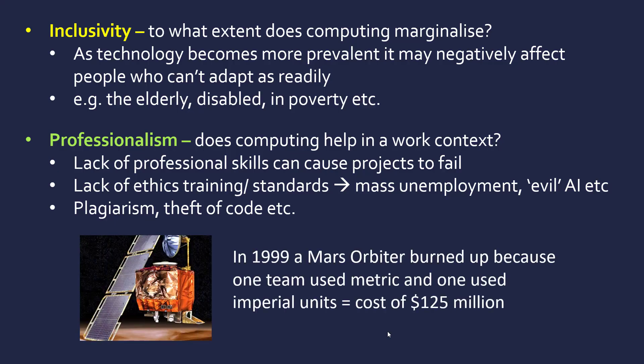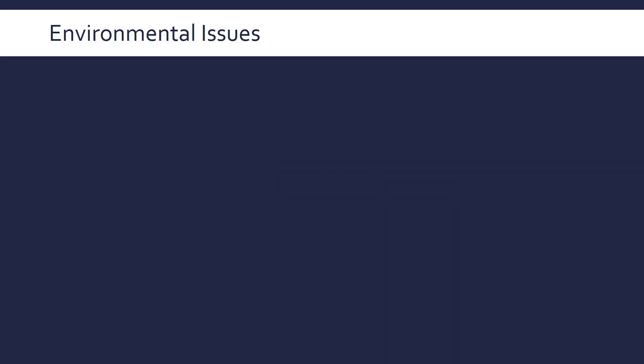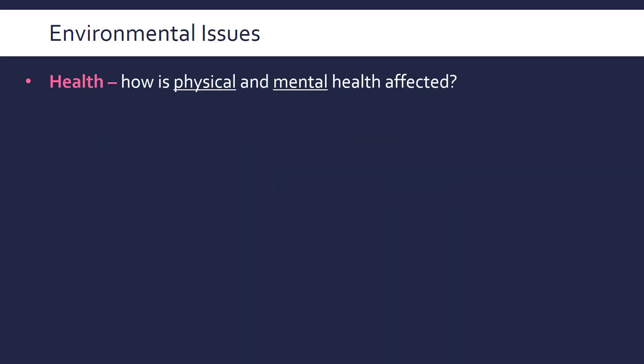A great example of a project which went badly due to a lack of professional skills is the NASA Mars Climate Orbiter, which was lost in 1999 because one team used metric units and one team used imperial units. No one died as it was unmanned, but it cost $125 million — a huge project down the drain.